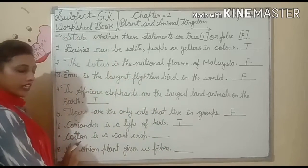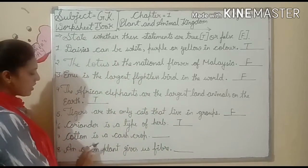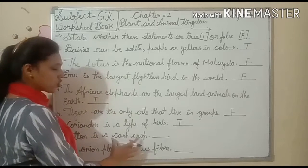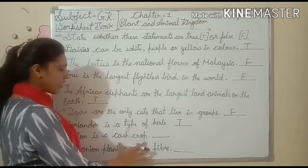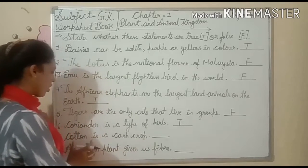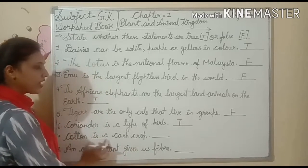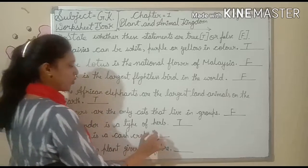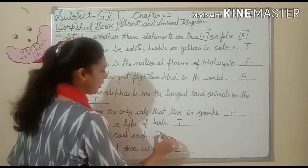Next, number 7: Cotton is a cash crop. Cash crop means nagdi fassal. Is the cotton plant a cash crop? Yes. So you write here: true.